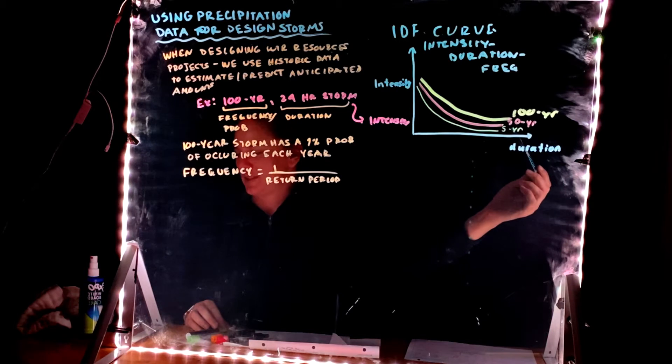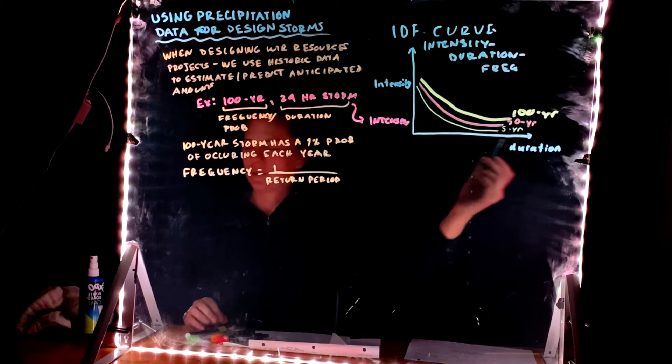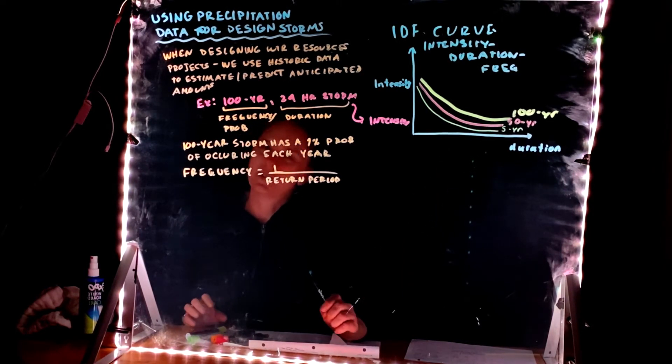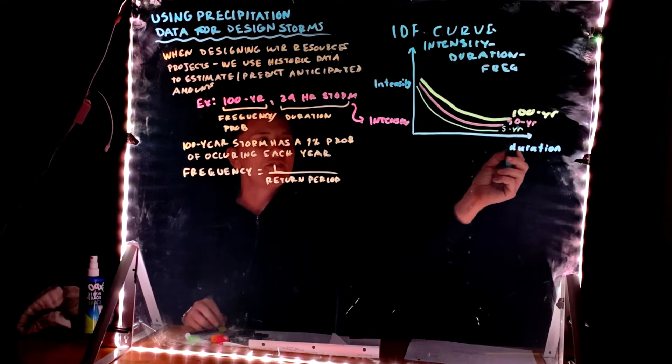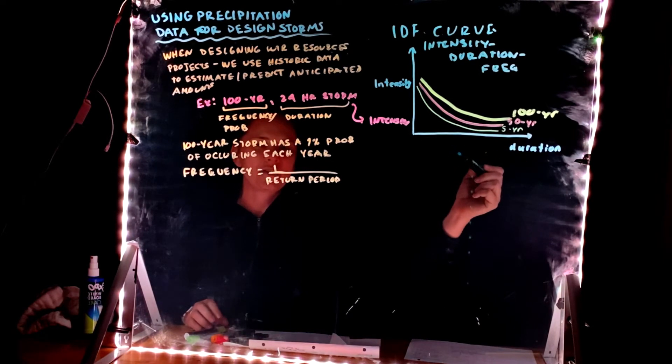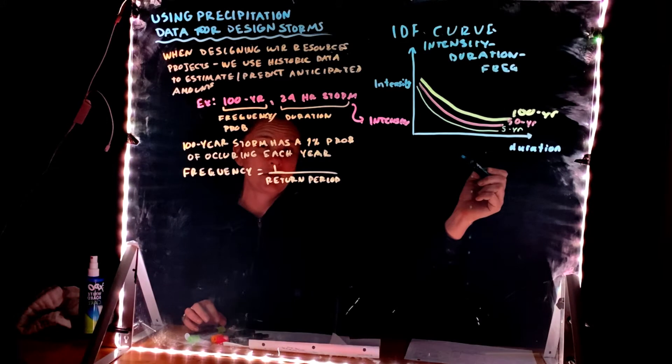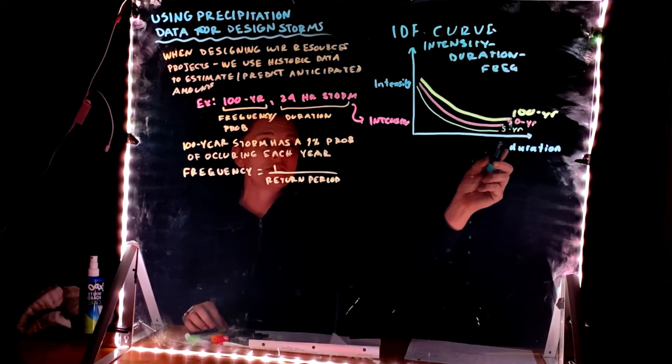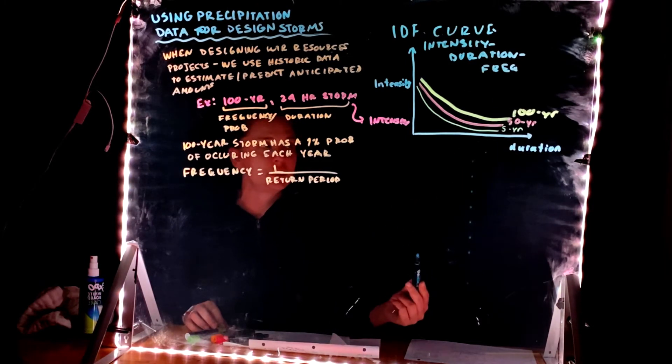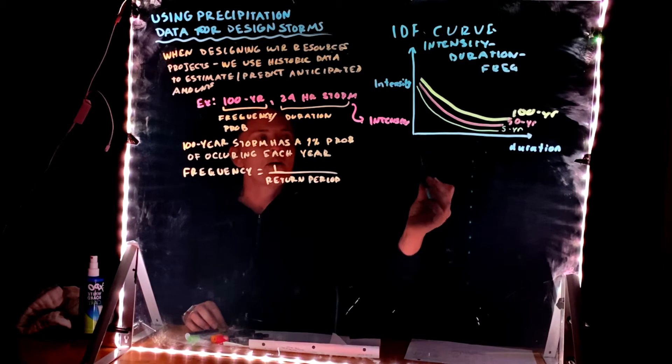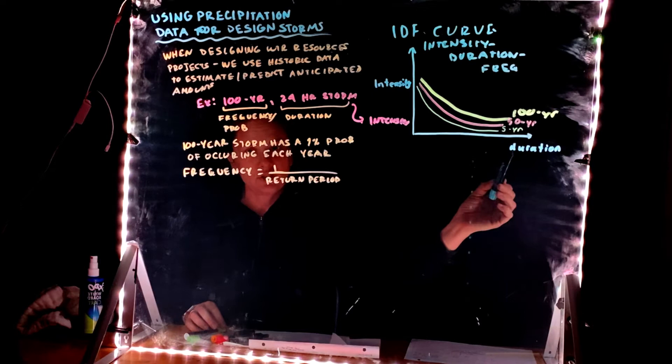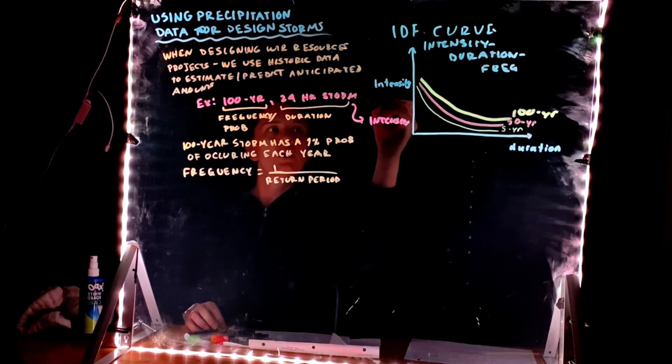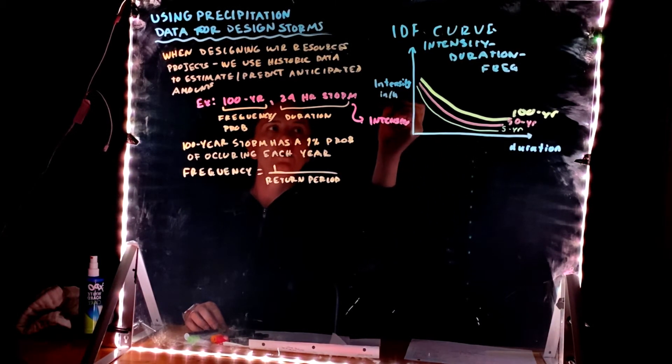50-year is one over 50, which is 0.2. I would calculate it, but my calculator is filming me right now. So a five-year storm is one over five. That is about a 20 percent chance of occurring every year. I'm pretty sure about that one. The 50-year is a two percent chance. The 100-year is a one percent chance of occurring any particular year. Any particular year, but then we have different durations. So as you increase in duration, your intensity, which we always count in inches per hour, is going to decrease.